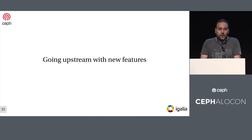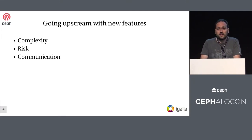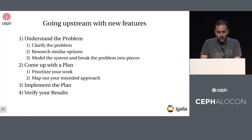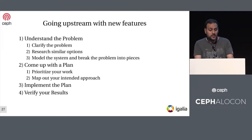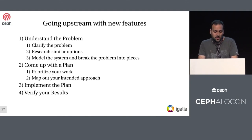About my way to go upstream with new features — I think it's all about handling technical complexity and business risk, and having good communication with every party: companies, users, developers, maintainers, everybody. I usually use this simple script taking four points: understanding the problem, coming up with a plan, implementing the plan, and verifying your results. I run this script in an open way in the community.